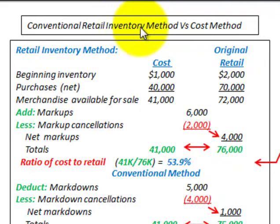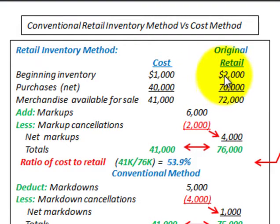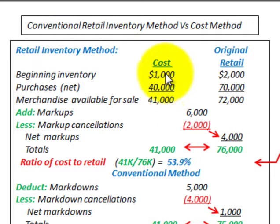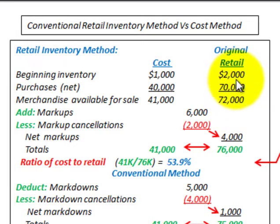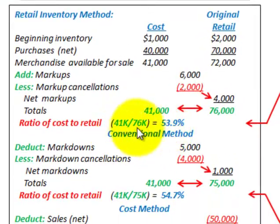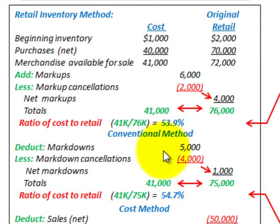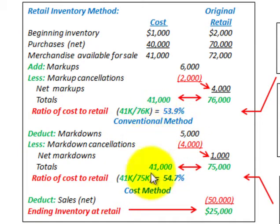Here we're going to be looking at the conventional retail inventory method versus the cost method. We have a retail store selling merchandise to customers. The store has a cost on its inventories - what the store paid for the merchandise - and then an established retail price, which is what they're selling to customers. We're going to determine our ending inventory at cost using these two different methods.